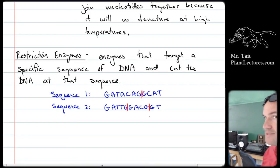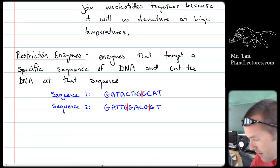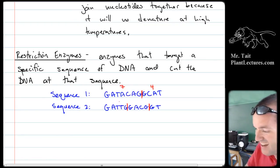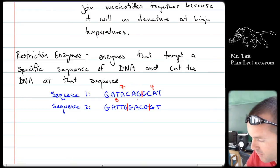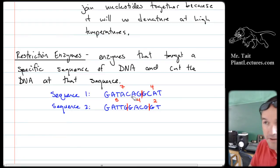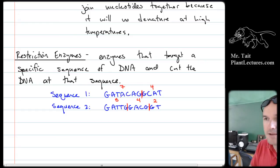So the top sequence turns into two segments — one with seven nucleotides and one with four. The bottom sequence gets cut into three segments: one with five, one with four, and one with two. Because these are different sequences, they get cut into different numbers of segments, and now we just have to analyze those segments.